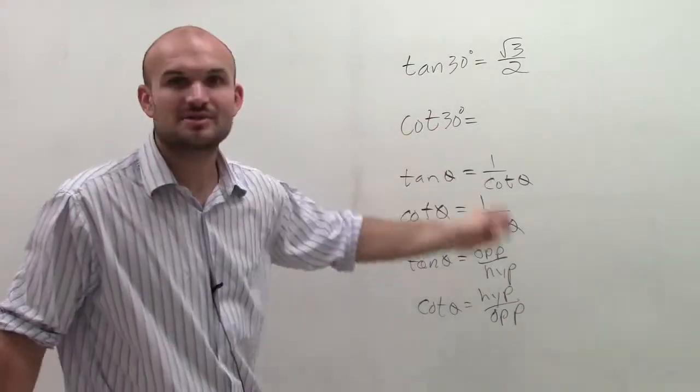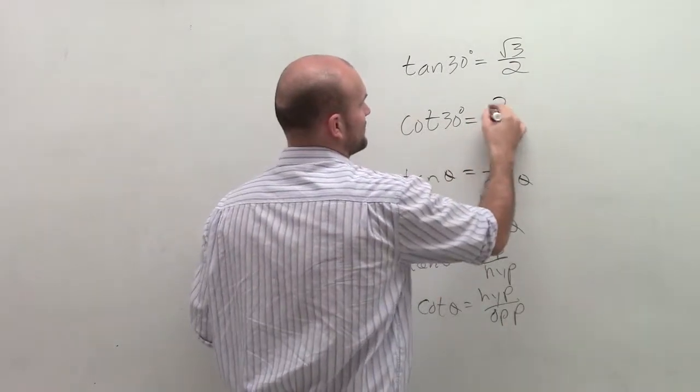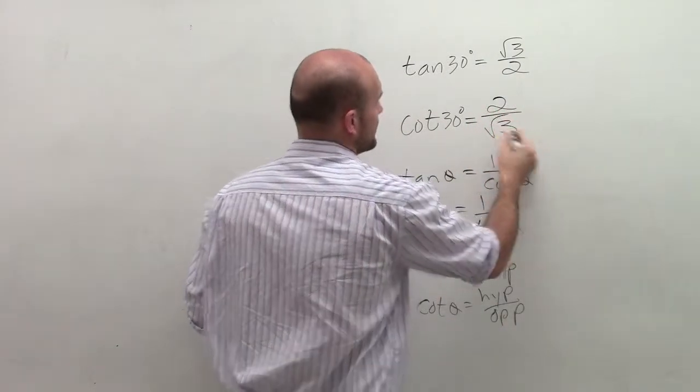So therefore, what you can see is these are just reciprocals. You can pretty much just take your numerator and your denominator and change them over. So the cotangent of 30 degrees is going to be 2 over radical 3.